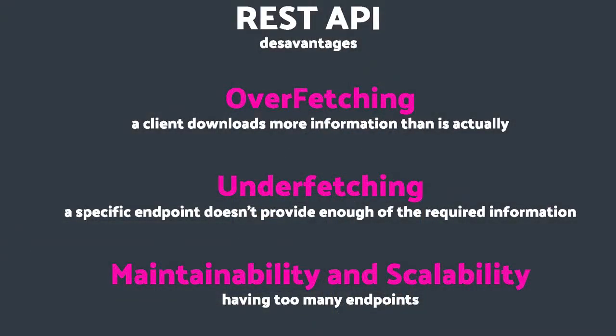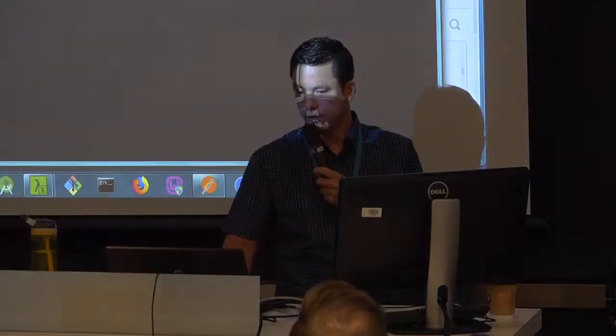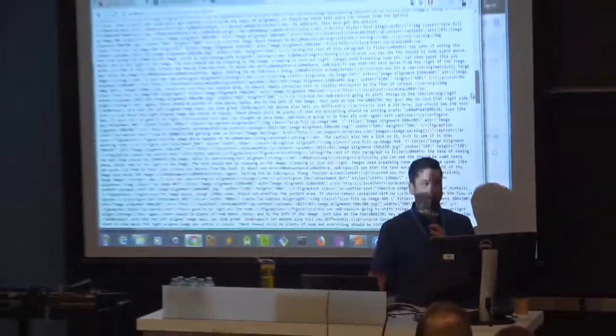There are a couple of disadvantages of using the REST API. The first one is called overfetching — making your client download way too much information for what your UI needs. For the UI we want to build, you have your title, category, author, author image, author name, and date. But from the REST API you get a ton of data you don't need. Do you need all that data downloaded by mobile users? That's too much data — that's overfetching.